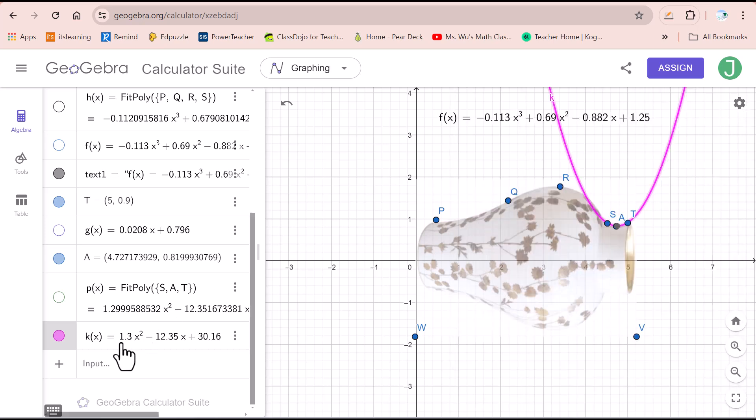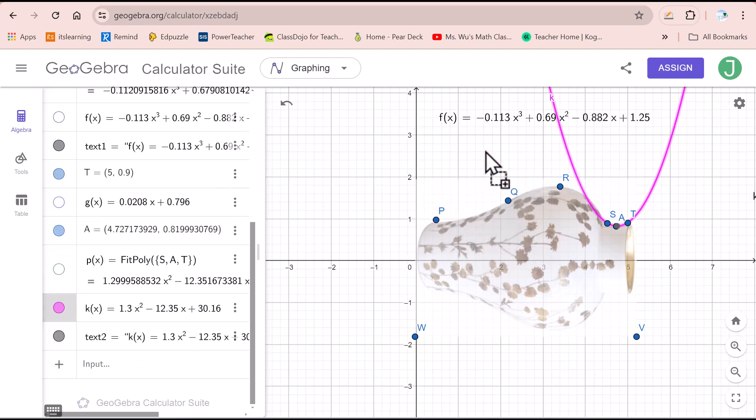You can also put h(x) to the coordinate of this algebra. Then you click here for f(x). Since we already figured out the curve from P to S and from S to T.